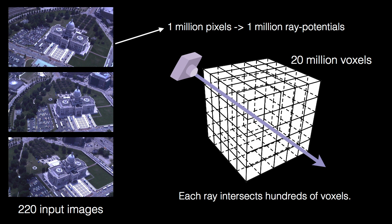For this example scene with 220 images, the MRF roughly contains 200 million ray potentials, where each potential involves hundreds of variables.